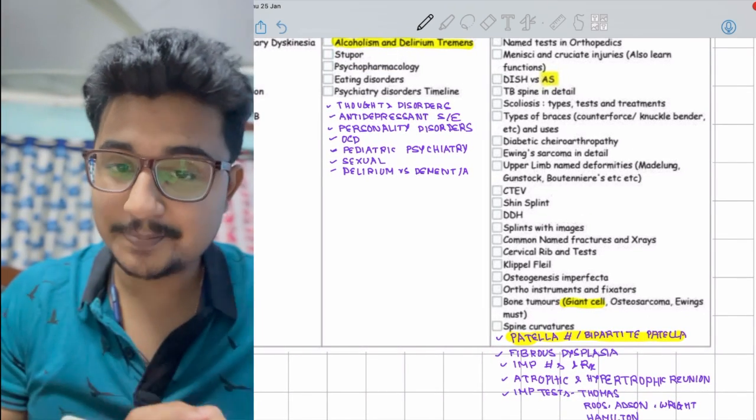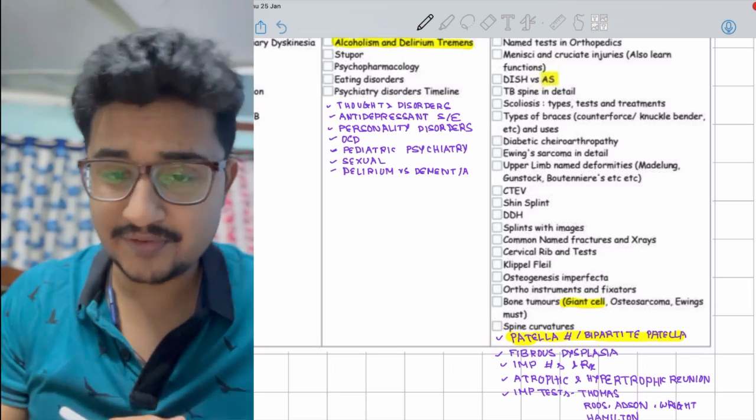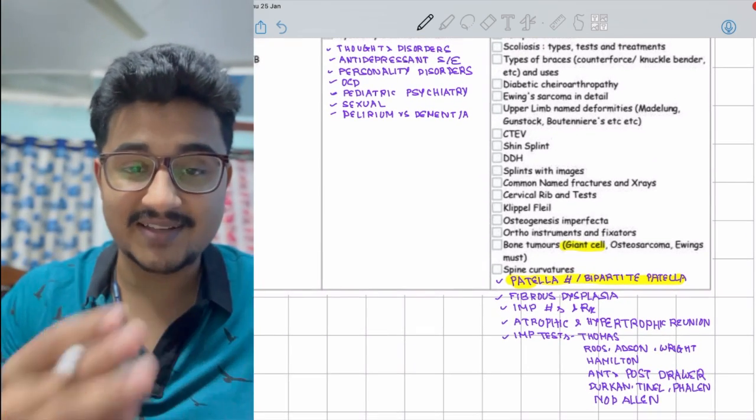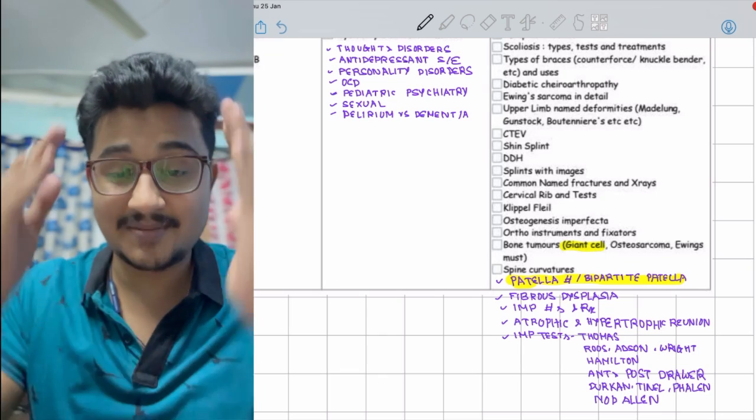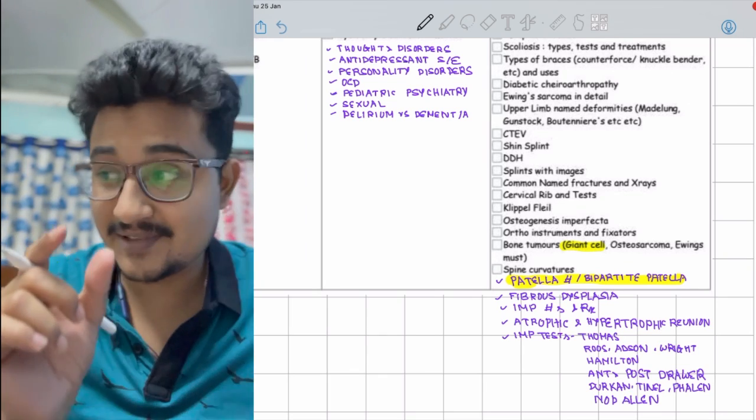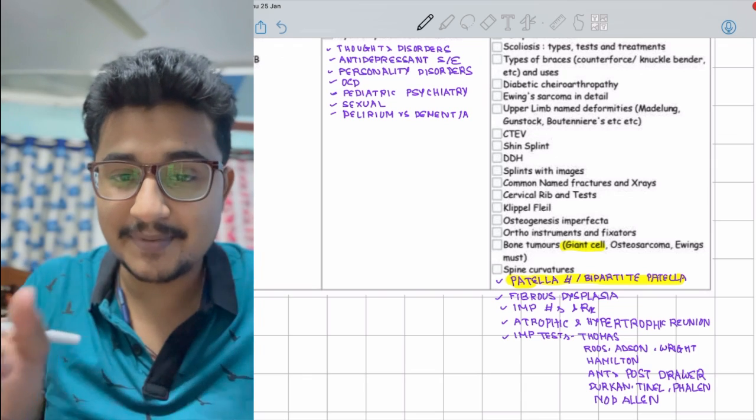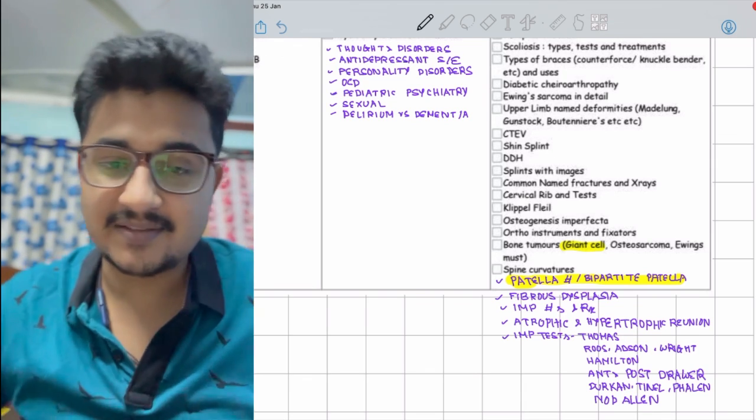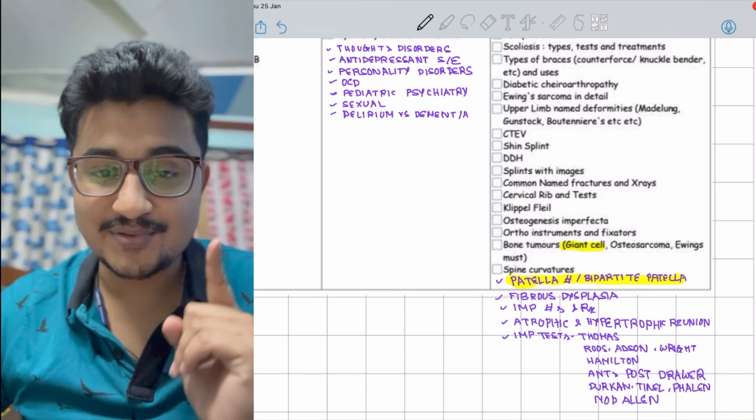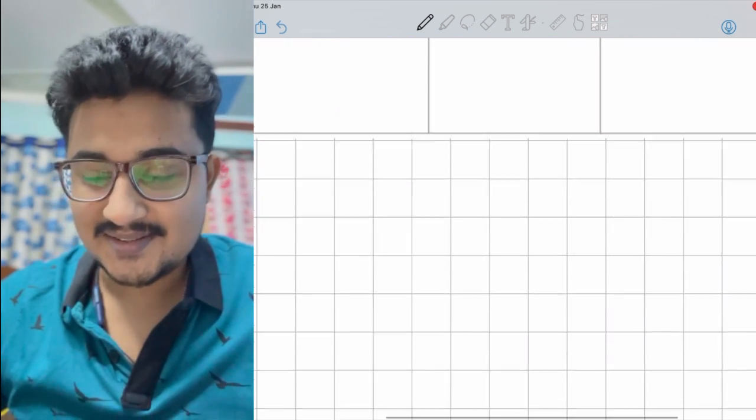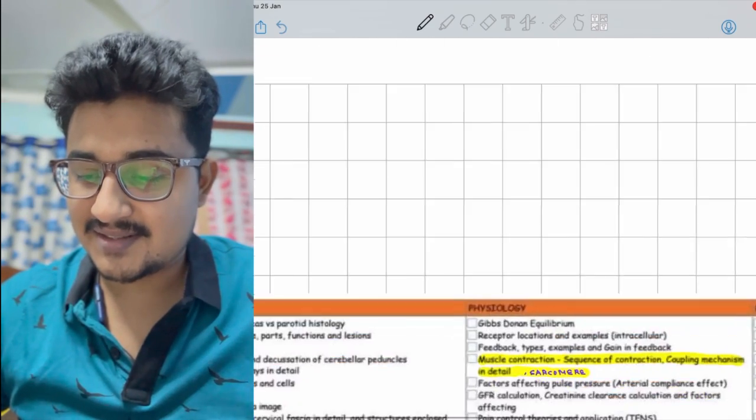In ortho, ATLS is very important. Patellar fracture this time has come. GCT is very important for INICET perspective, it's been asked numerous times. This time the patellar fracture and bipartite patella - oh my god, I missed it. It was written in the NEET exam question paper that it was bipartite patella but I didn't see that and marked patellar fracture. In the exam hall you should keep your mind sharp.